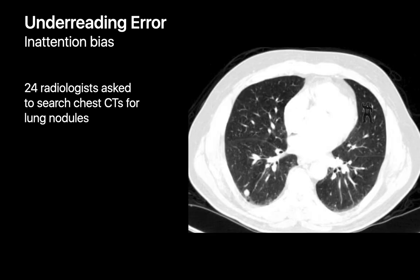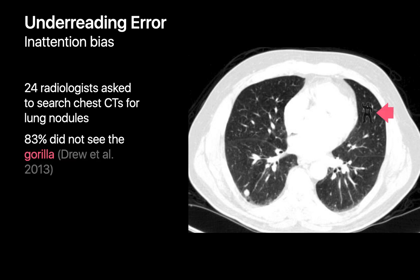Inattention bias makes under-reading errors more likely. Inattention bias is a tendency we have as humans to miss things that we aren't actively paying attention for. This was demonstrated in a well-known study where 24 radiologists were asked to look for lung nodules on chest CT images, and 83% failed to notice there was an image of a gorilla in the lung. As one of my attendings used to say: you don't see what you don't look for.